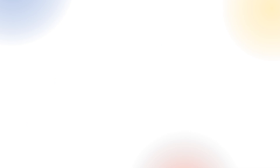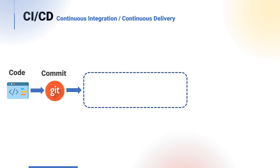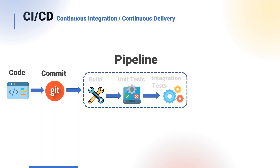The next cloud native practice we're going to look at is CI/CD — continuous integration and continuous delivery. Continuous integration is a practice that encourages frequent development changes with an emphasis on automated testing, therefore allowing developers to frequently check in code and automatically test their projects prior to release.